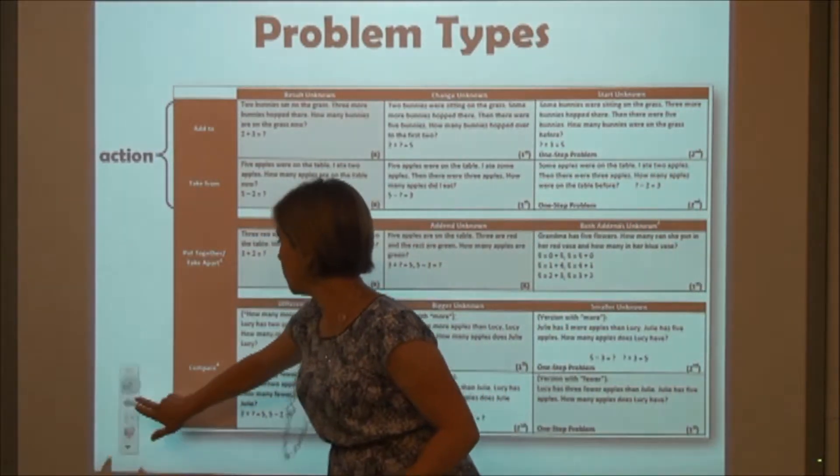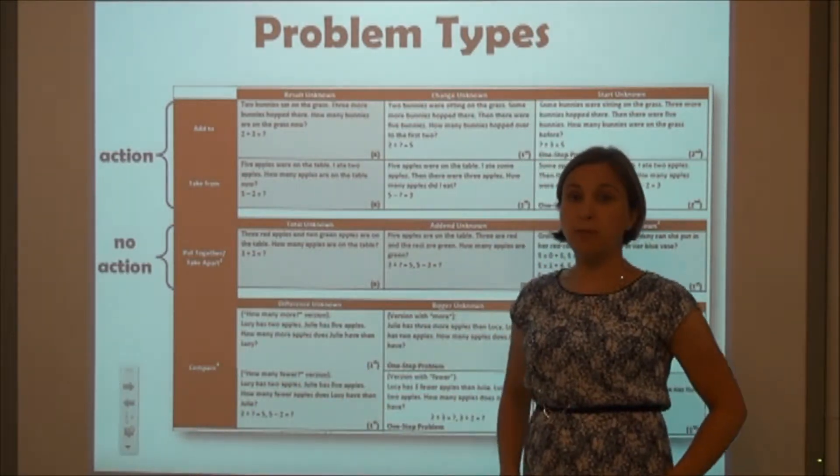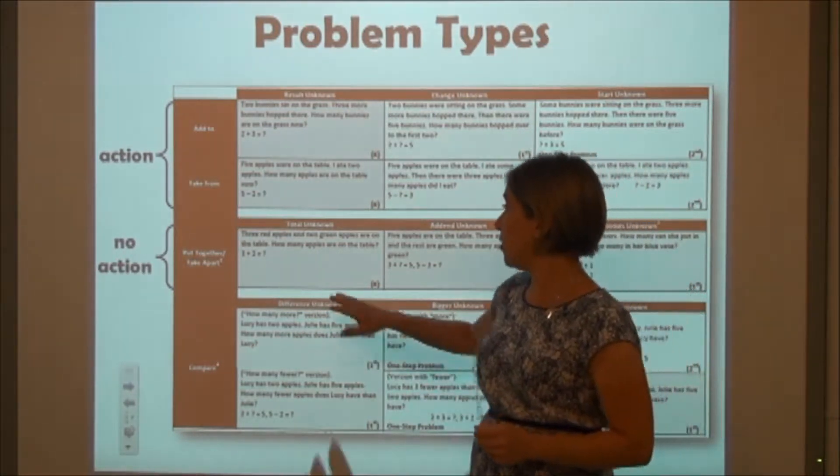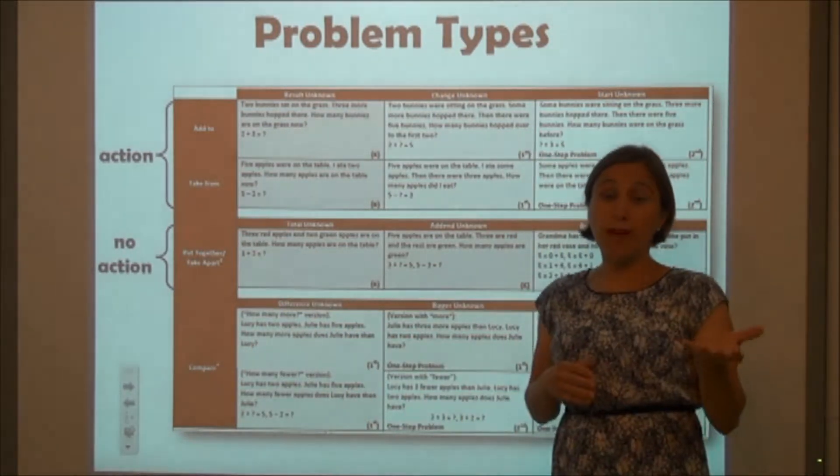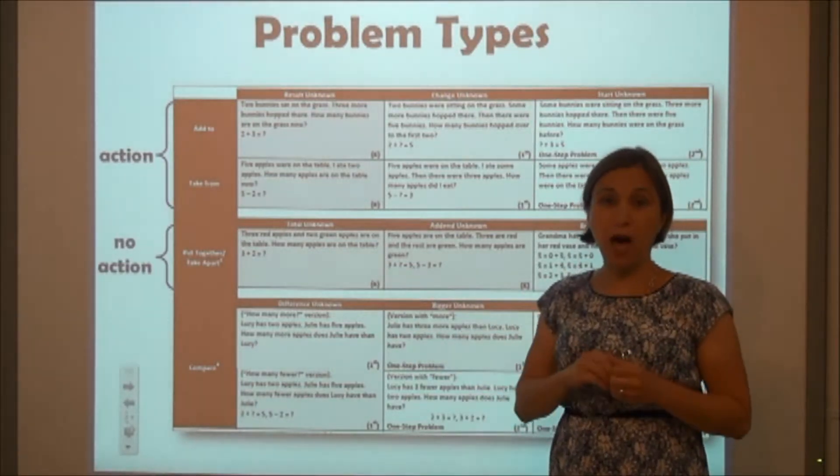The problem types down here require no action. This means that we have the whole set and we're just looking at parts of the set. For example, there's some red apples and some green apples on the table. We just want to know how many of them.